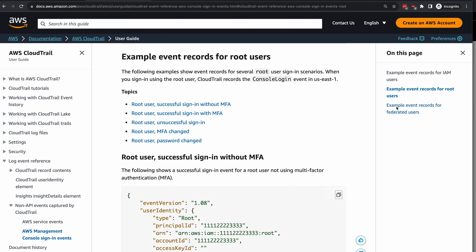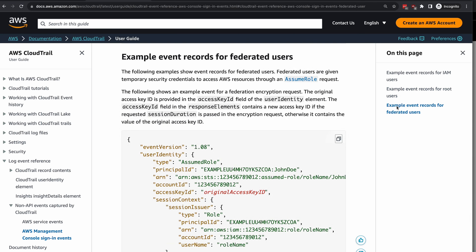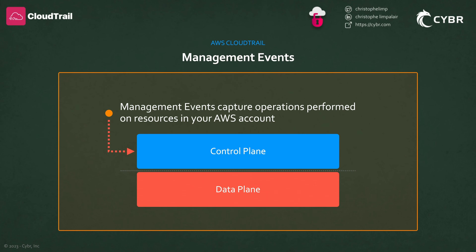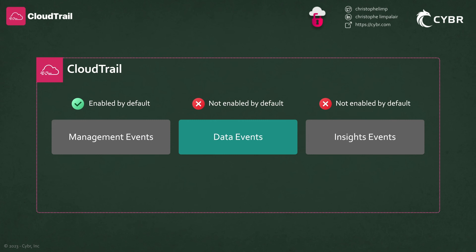It could even be a root user changing their password or changing their MFA settings, etc. For more examples like these, please refer to the AWS documentation. So this is all considered to be part of the control plane and part of what gets logged in management events by CloudTrail.